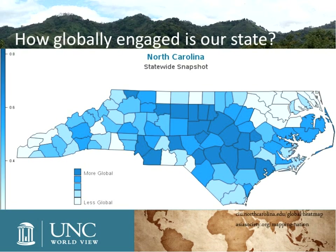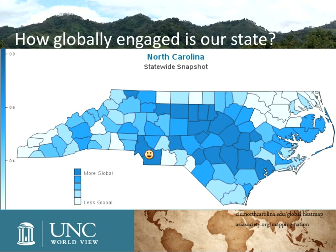Now let's talk about the district level. North Carolina has 100 counties, and this map shows a snapshot of global engagement. Counties that are darker blue have higher levels of global engagement. I'm coming to you from Orange County; our capital is in Wake County; Duke is in Durham County — all in what we call the triangle. You can see a lot of global engagement through universities, businesses, and an international airport — all things that help make a globally minded and engaged county.